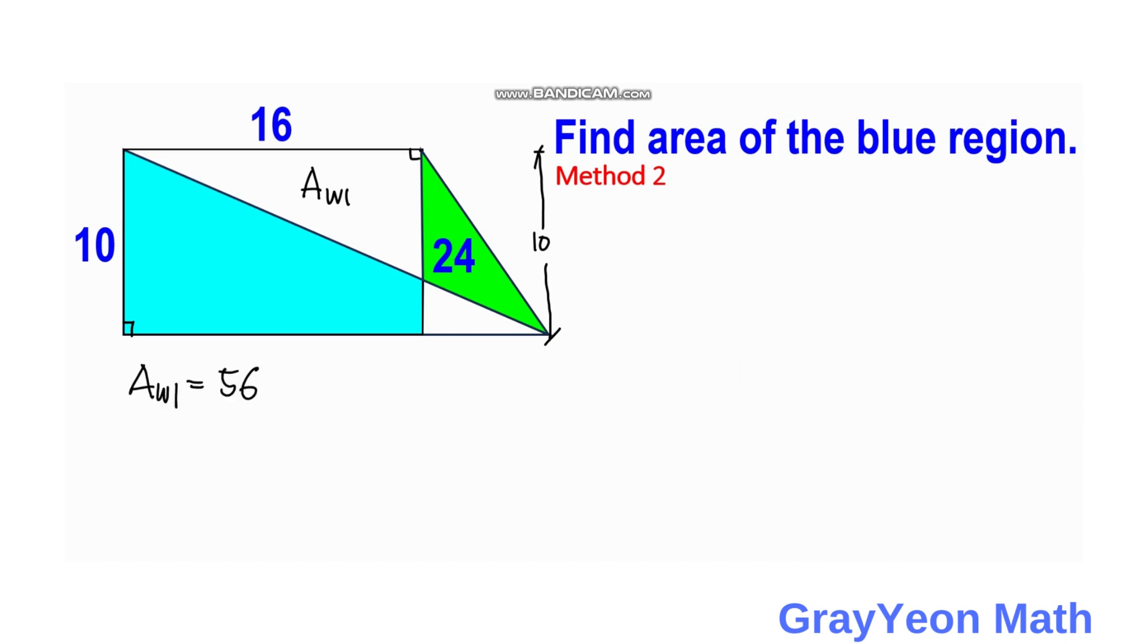So for the final step, since we already know the value of area W1, then the area of the blue region is simply equal to the area of the whole rectangle, and that would be 10 times 16, minus the area of W1, and that is 56.